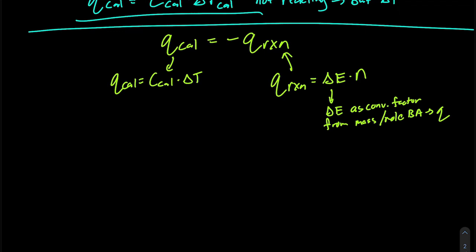Now we have this relationship and we ask: which side do we have enough information to quantify? We don't know the bomb calorimeter heat capacity — that's our goal. So we need to use all the information about our reaction to quantify Q_reaction. We do know delta E and we know the mass, which can get us to the number of moles.